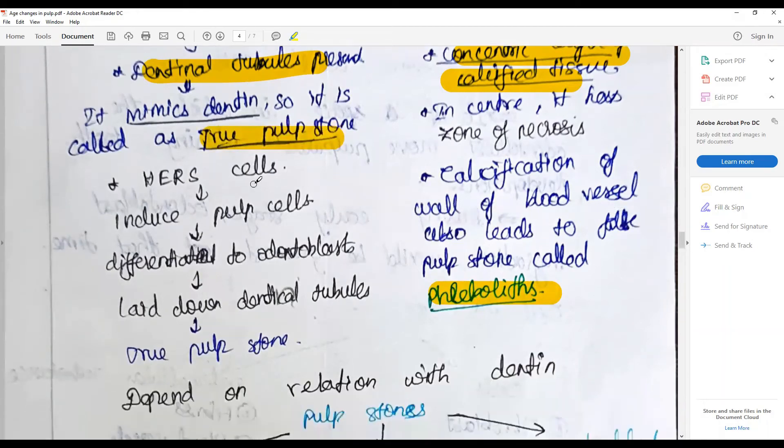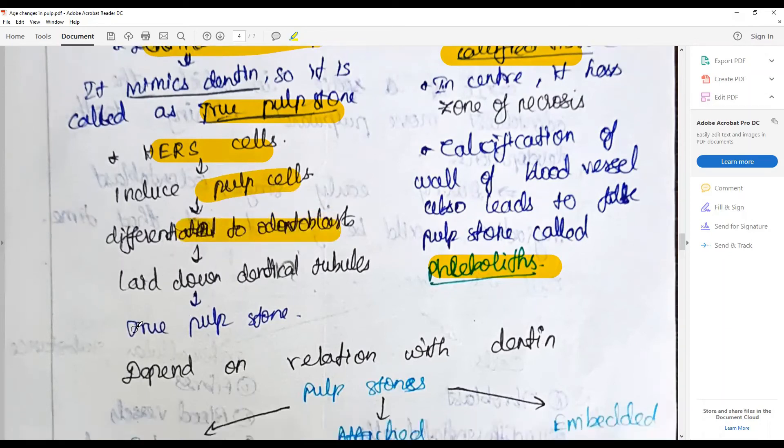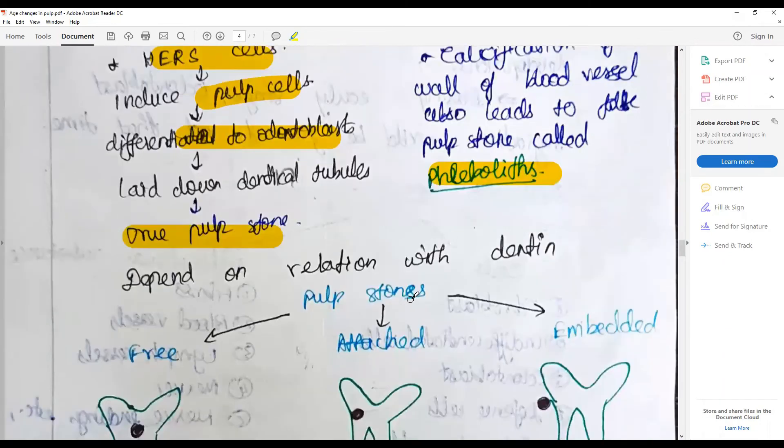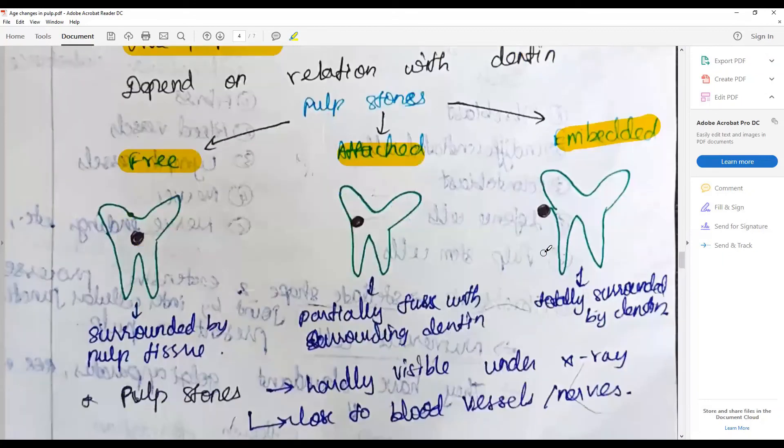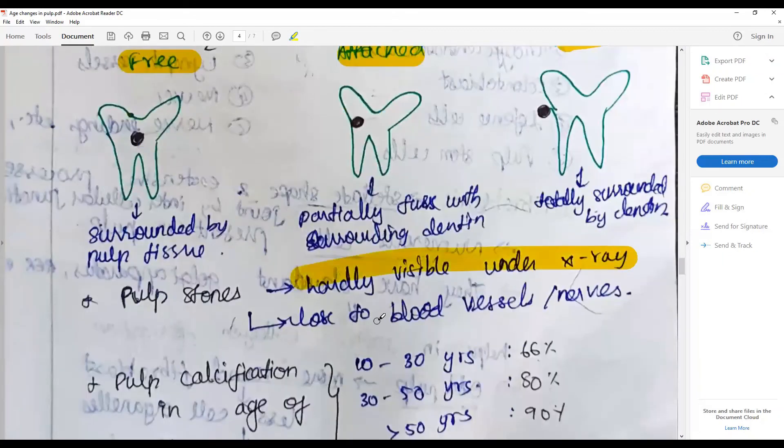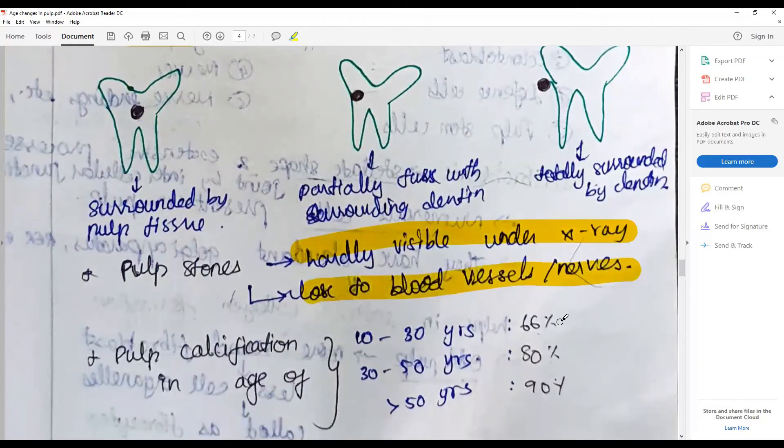The calcification of blood vessels may lead to false pulp stone called as phlebolith. When there are dentinal tubules present in this calcification, they are called as true pulp stones and could be from Hertwig's sheath cells entrapped in the dental papilla that induce pulp cells to differentiate to odontoblasts. They are hardly visible in x-rays and very close to blood vessels and nerves.